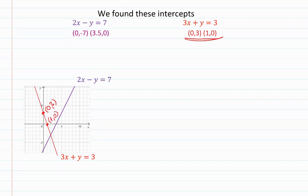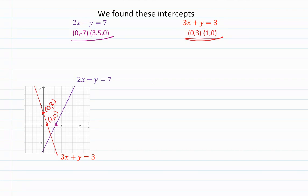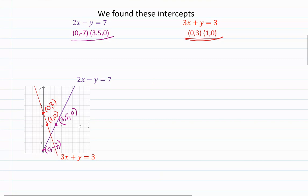For the purple equation, we graph (3.5, 0) and (0, -7). It's already graphed, but I'm showing you how we place the points.